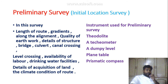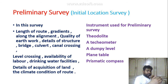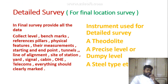The next type is preliminary survey, also called initial location survey. In this survey, the following are determined: length of route, gradient along the alignment, quality of earthwork, details of structures such as bridges, culverts, canal crossings, level crossings, availability of materials, drinking water facilities, details of land, climate conditions, and route. Instruments used for preliminary survey include a theodolite, tachometer, dumpy level, plane table, and prismatic compass.